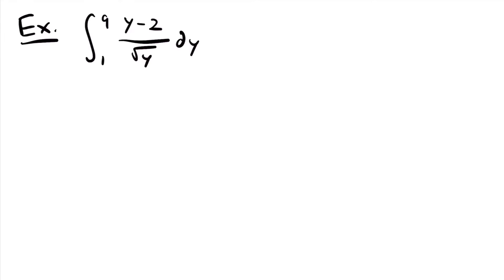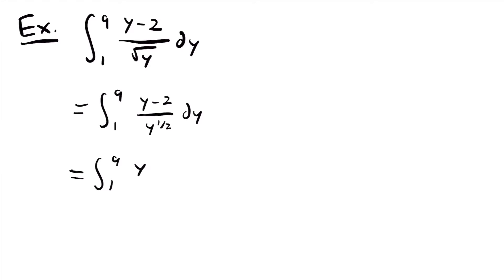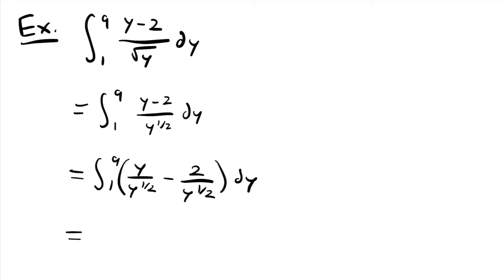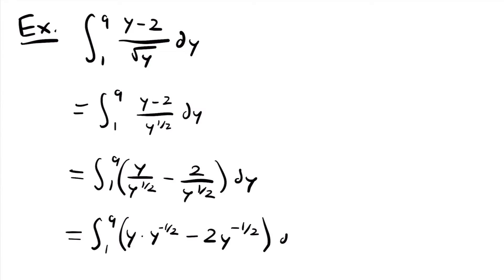In its current state the function looks pretty complicated, but rewriting to y to the one half power is a good first step. So this will equal the integral from 1 to 9 of y minus 2 divided by y to the one half power. We can then split this fraction into two separate fractions: y divided by y to the one half power, minus 2 divided by y to the one half power. And then we can move the denominators to the numerator by making the exponents negative: y times y to the negative one half power, minus 2 times y to the negative one half power.